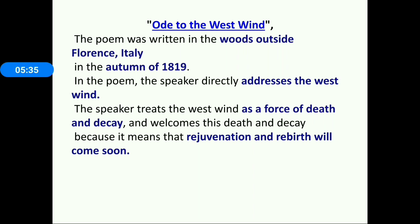Ode to the West Wind was written in the woods outside Florence, Italy, in the autumn of 1819. In the poem the speaker directly addresses the West Wind — the literary device used is personification. The speaker treats the West Wind as a force of death and decay, and welcomes this because it means rejuvenation and rebirth will come soon.